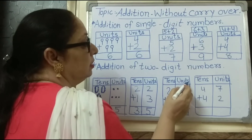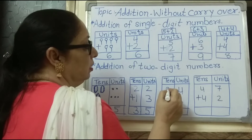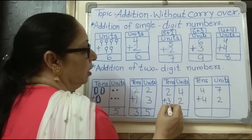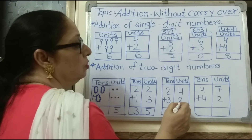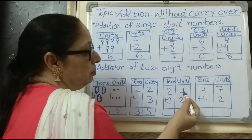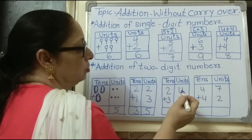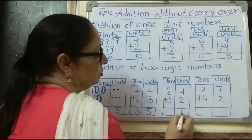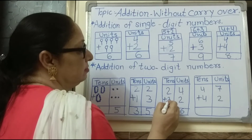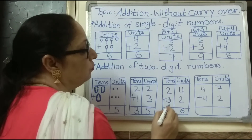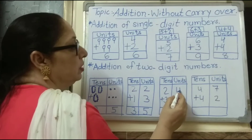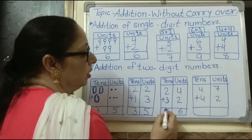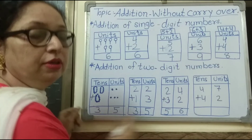The next question has tens and units columns. We will see — the first number has two tens and four units. The second number has three tens and two units. Top number units: four. Bottom number units: two. Four units plus two units equals six units. Two tens plus three tens equals five tens. All together: five tens and six units — the number is fifty-six.